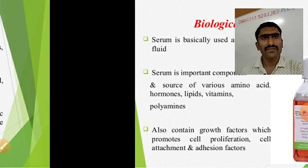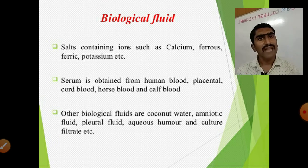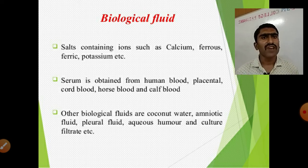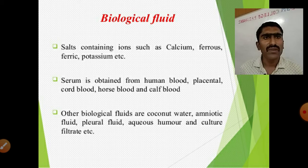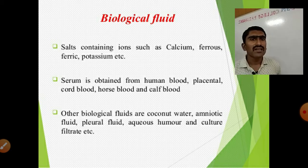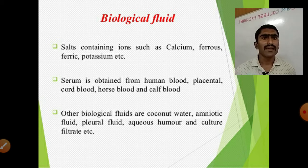Biological fluids are salts containing ions such as calcium, ferrous, ferric, potassium, etc. Serum is obtained from human blood, placental cord blood, horse blood, and calf blood. Other biological fluids include coconut water, amniotic fluid, pleural fluid, aqueous humor, and culture filtrate.